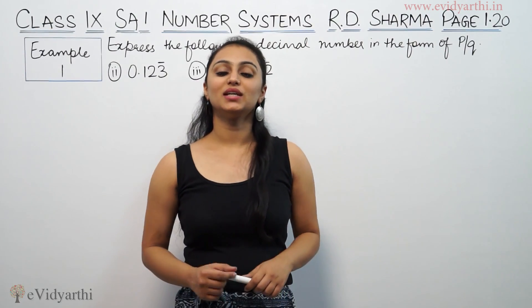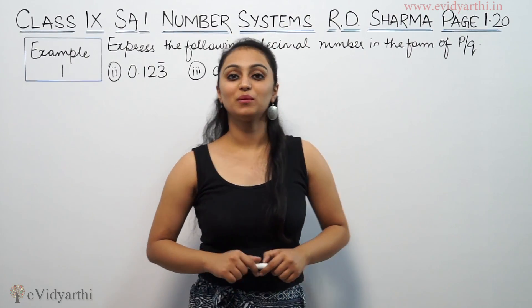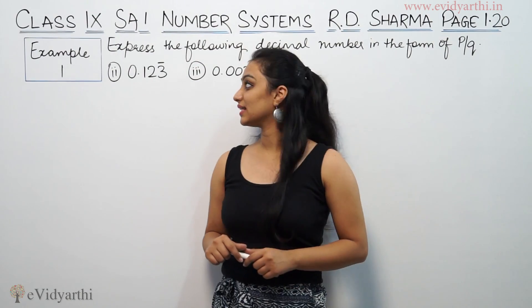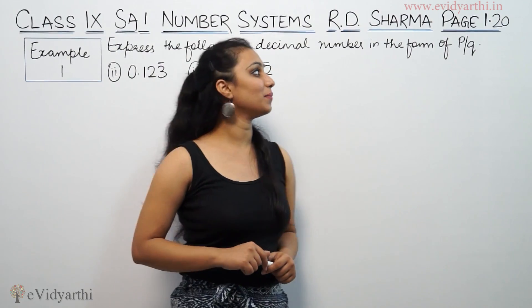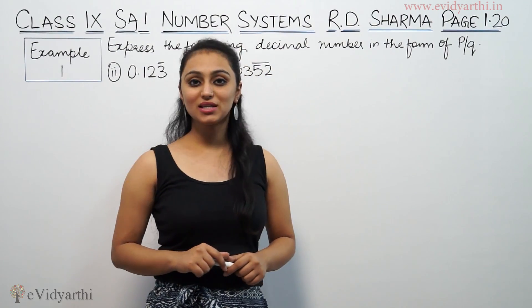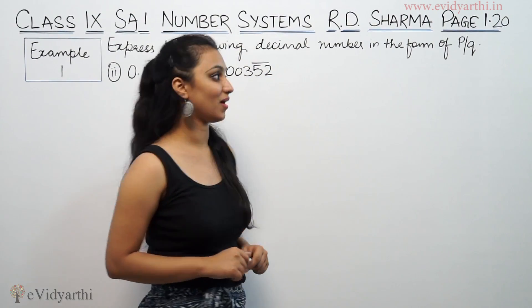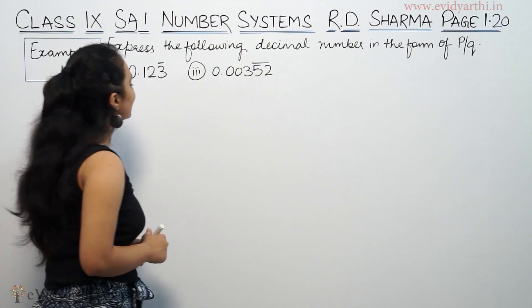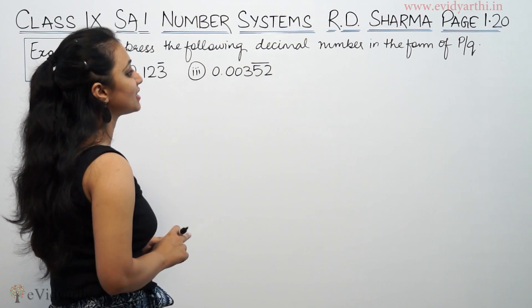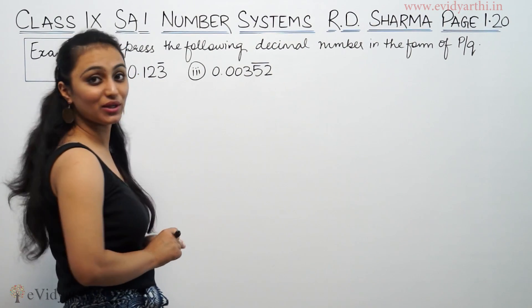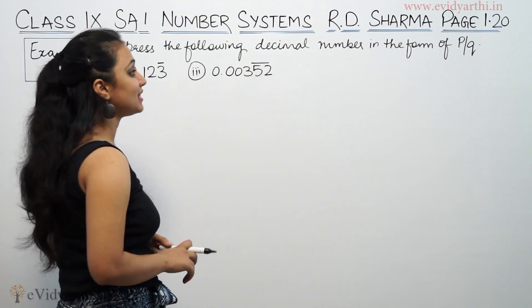Hi, this is Krishku with another question on number systems. This is example number 1 from page number 1.20 of R.D. Sharma. We have to present the following decimal numbers in the form of P/Q.